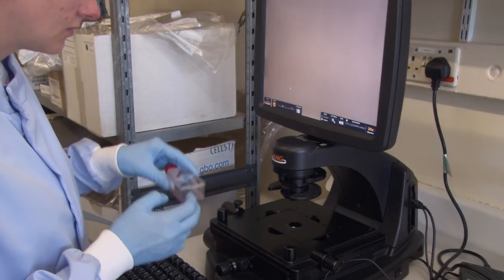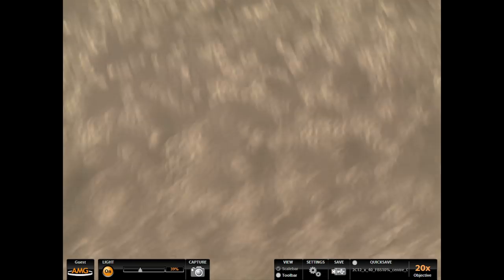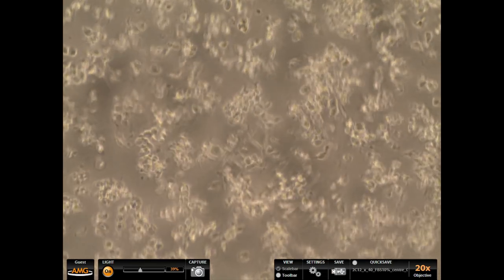Shock the flask by tapping, to dislodge the cells. Examine the cells again to ensure that they're floating free of the plastic.